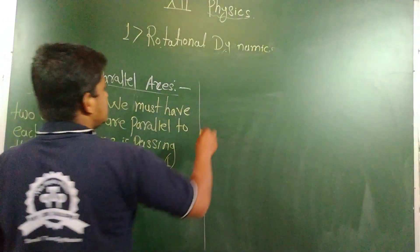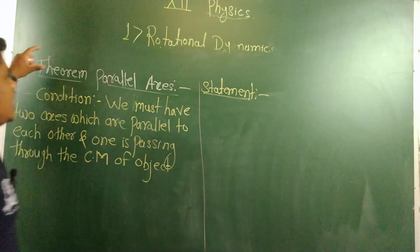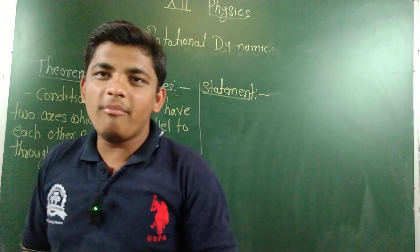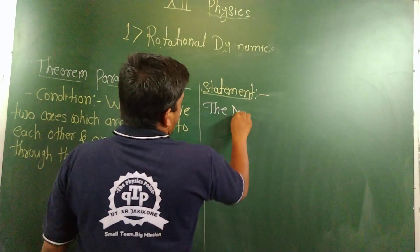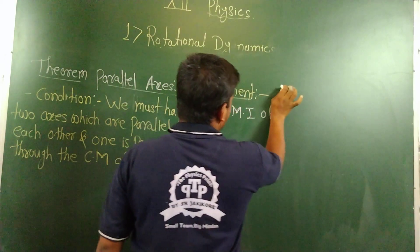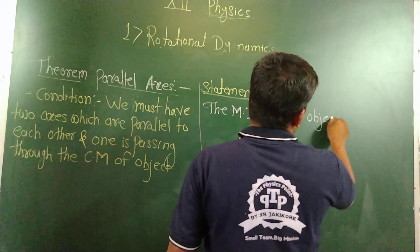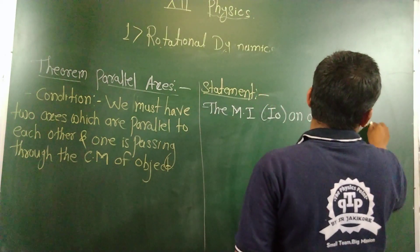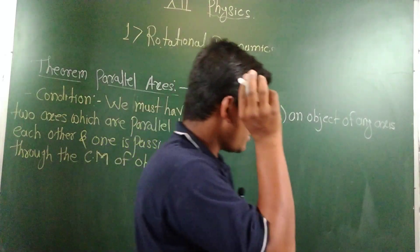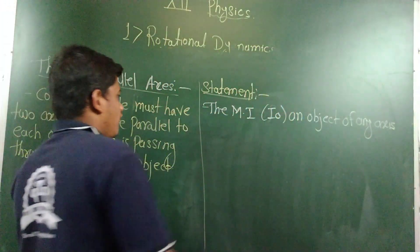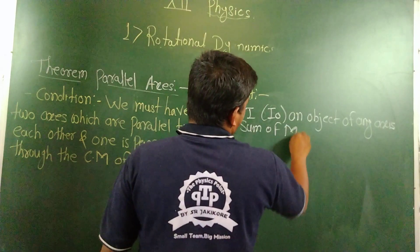Taking the statement of the theorem of parallel axis: the moment of inertia of an object about any axis — that is I_O — is the sum of the moment of inertia about the axis which are parallel to the above axis.